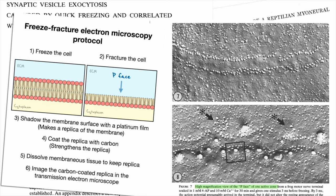After the membranous tissue is dissolved from the replica, the replica can be imaged in the transmission electron microscope. The subsequent image captured by the microscope is what you see on the right.